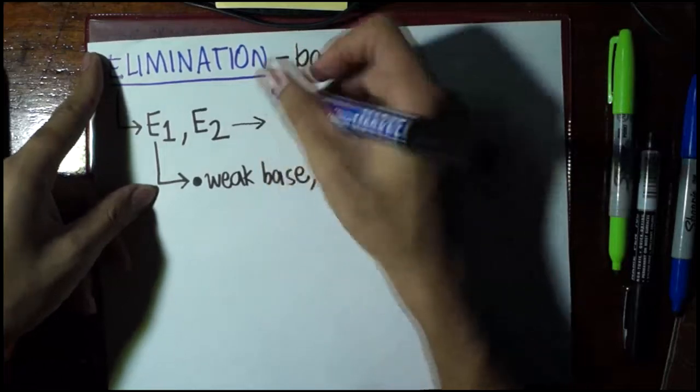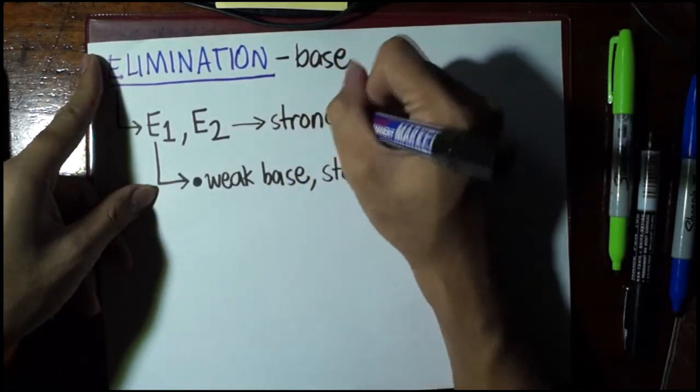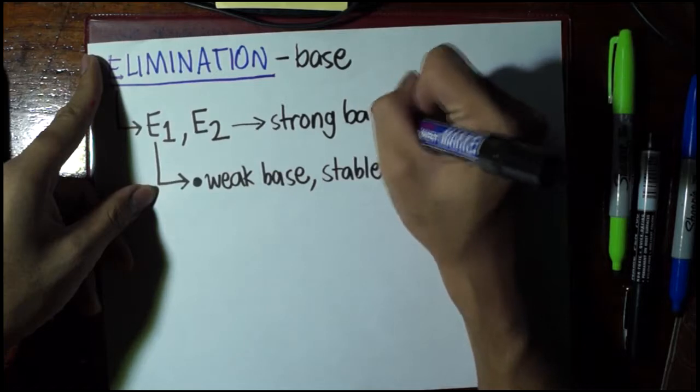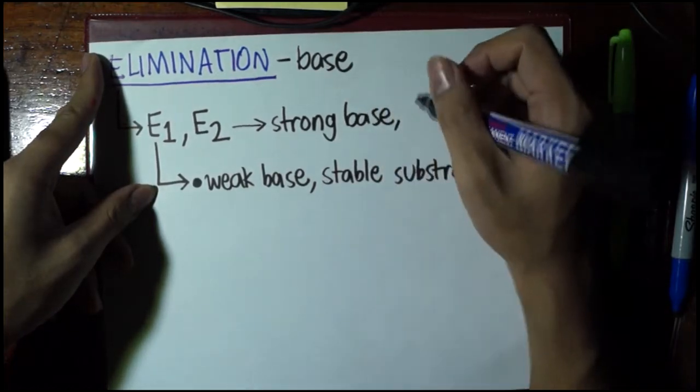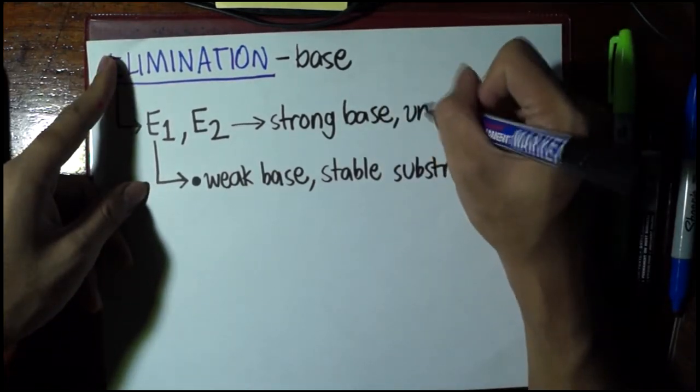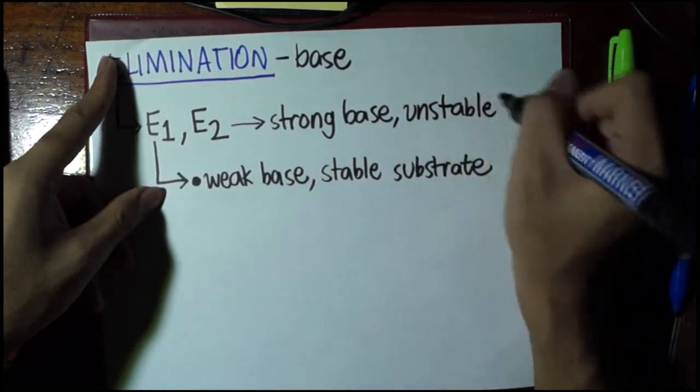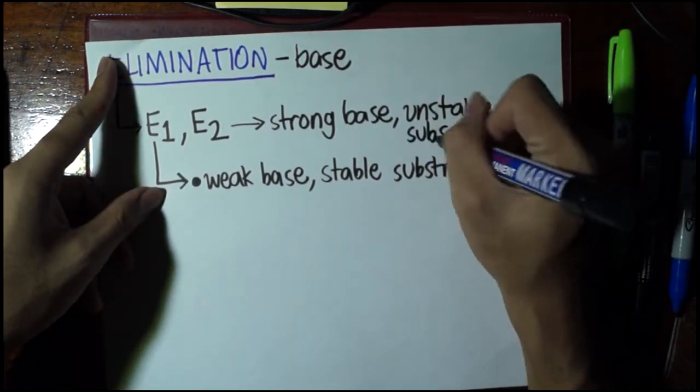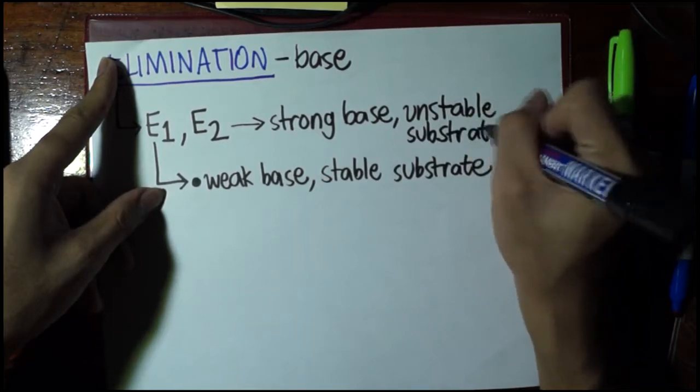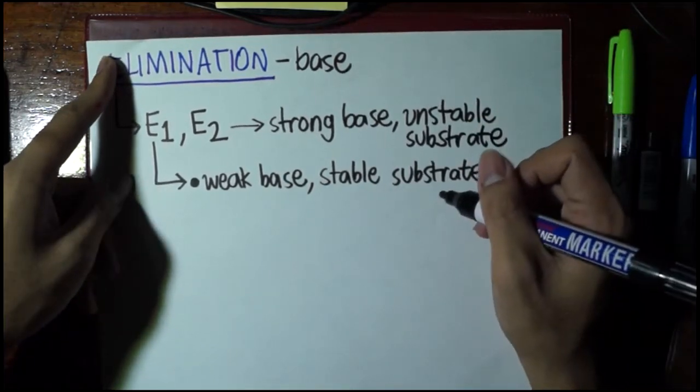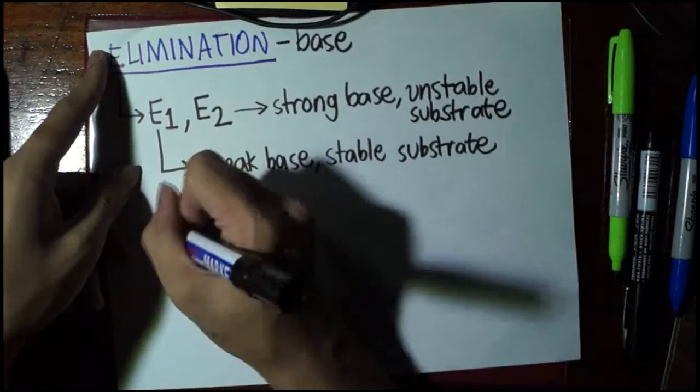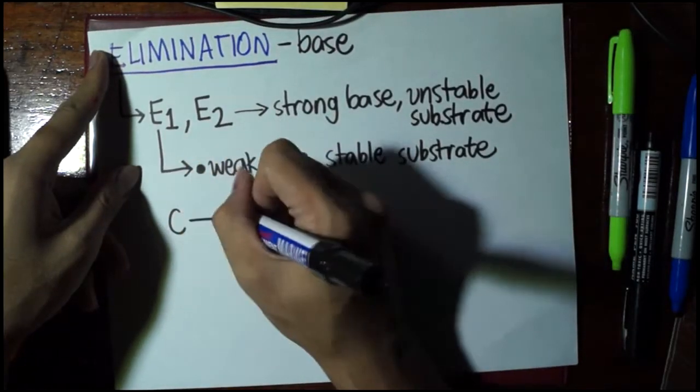In E2, just the opposite, but just like in SN2, we use a stronger agent. And this time we use a strong base, and here the reaction allows for the substrate to be unstable. Now, let's try to draw this in order to see more how this works.